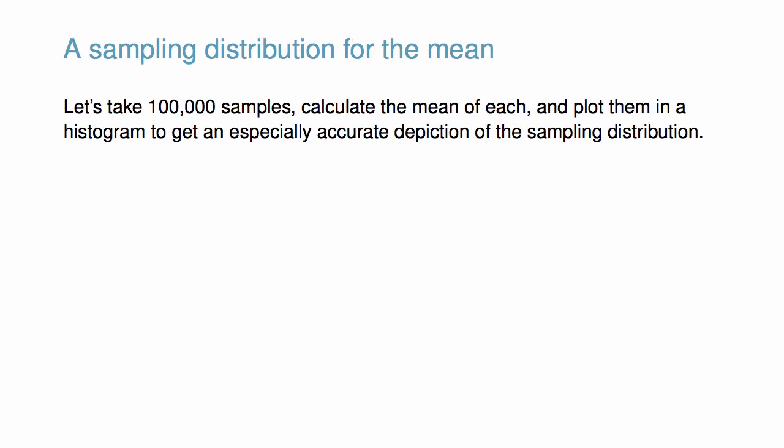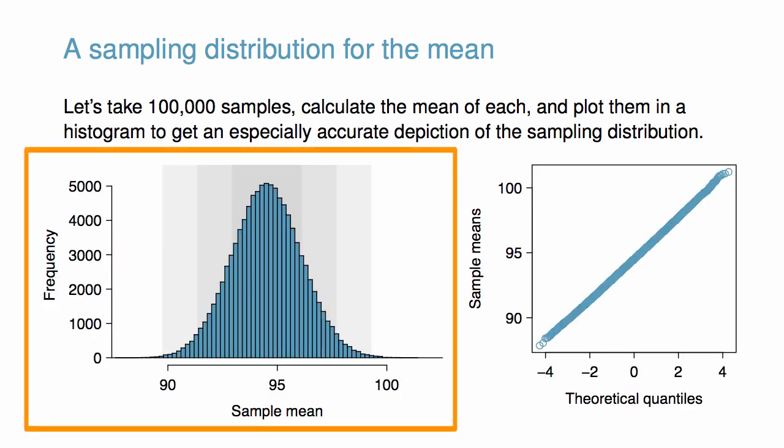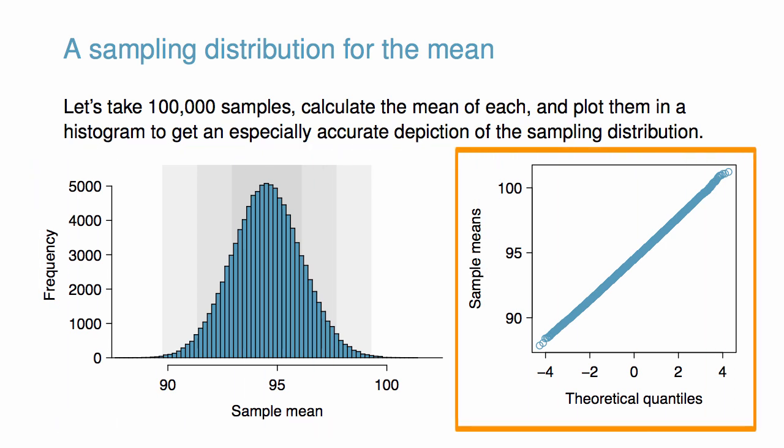Let's take 100,000 samples, calculate the mean of each, and plot them in a histogram to get an especially accurate depiction of the sampling distribution. The left panel shows a histogram of the sample means for 100,000 different random samples. The right panel shows a normal probability plot of those sample means. Both plots show that the collection of sample means follow a normal model. This result can be explained by the Central Limit Theorem.